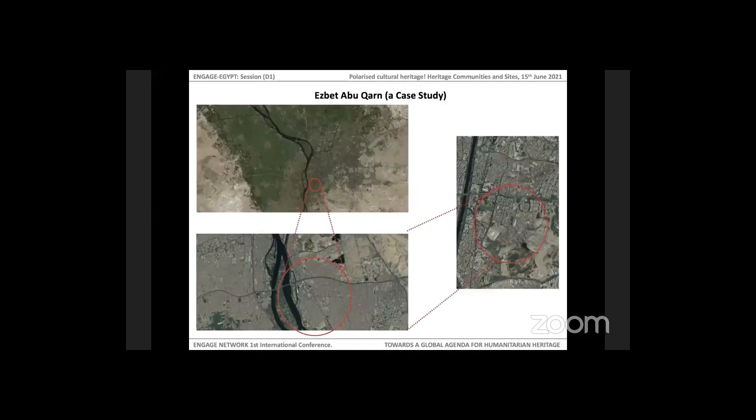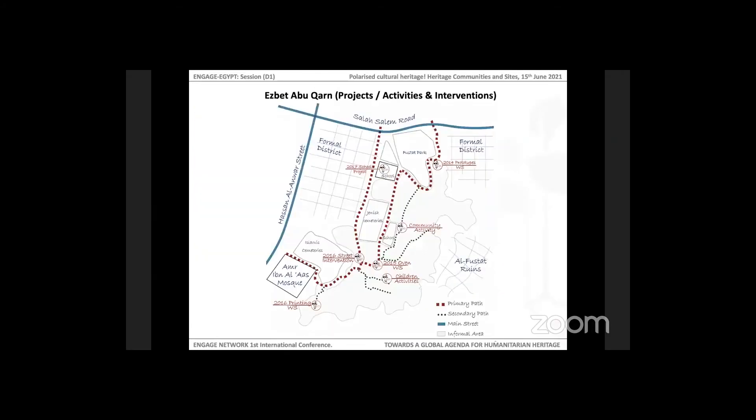Ezbet Abu Qarn is the first area which we intensively worked in. The area is located behind Amr ibn al-As Mosque, which is the first mosque in Africa and in Egypt. It expands to Salah Salim Street in the north. We try to cover with our activities the whole area with either projects, workshops, or interventions. This gives us access to all community members and also gives us the chance to explore similarities and differences between the different groups of people and identify their cultures.